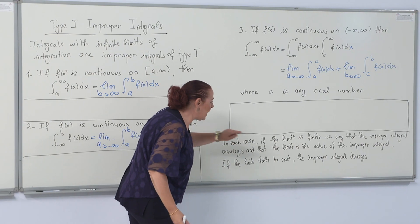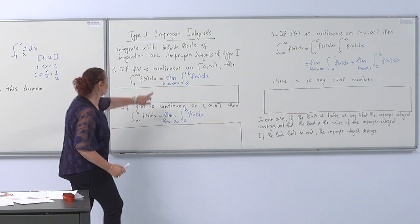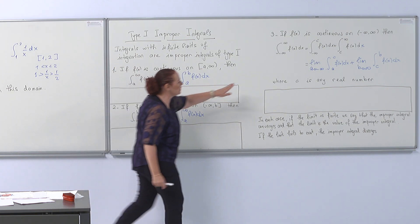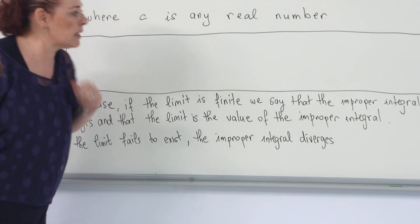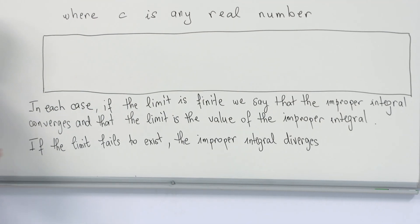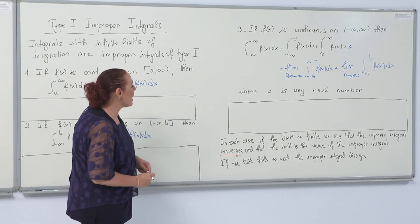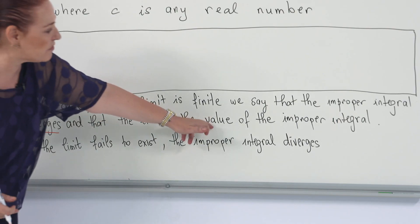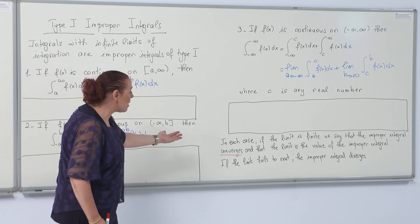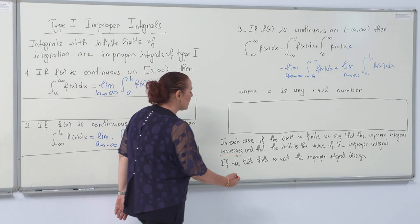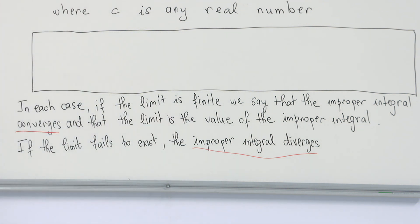In each case, if the limit on the right-hand side is finite — here you have one limit, here you have one, and here you have two — we say the improper integral converges and that limit value is the value of the improper integral. If the limit fails to exist, we say the improper integral diverges.